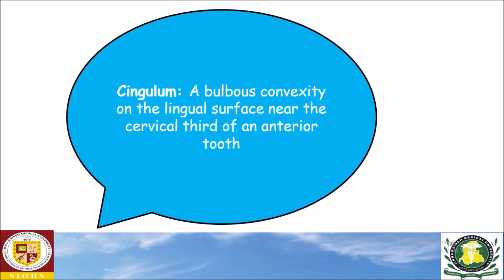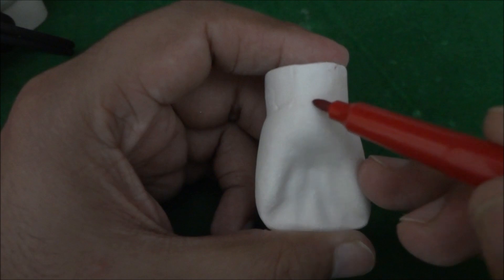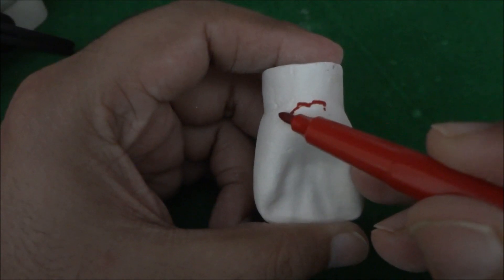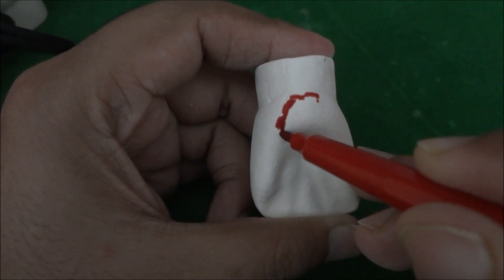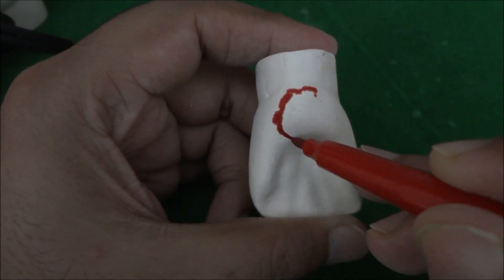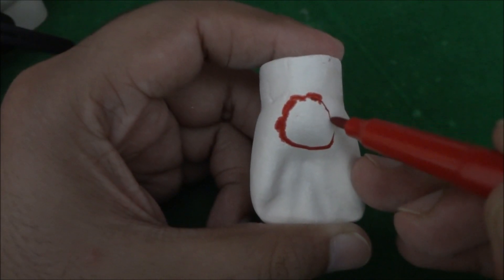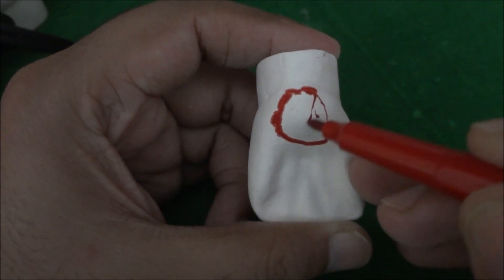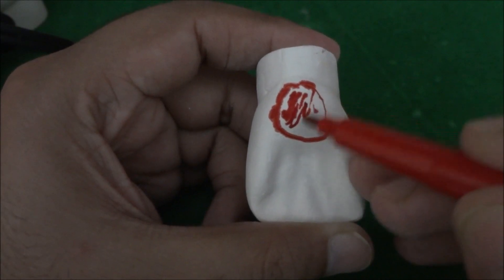Cingulum is a bulbous convexity on the lingual surface near the cervical third of an anterior tooth. This is the cingulum — this bulbous convexity at the cervical third is the cingulum.